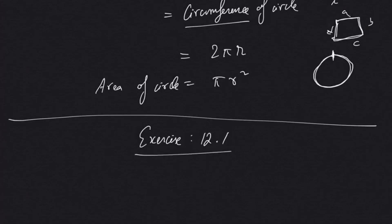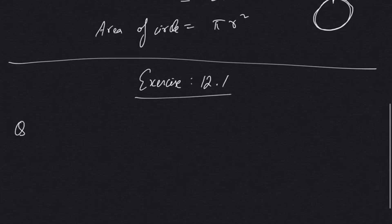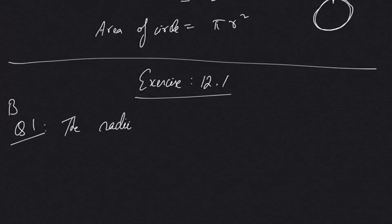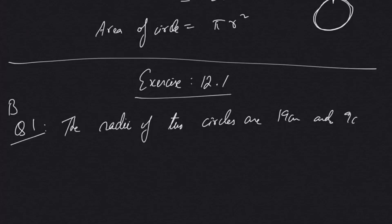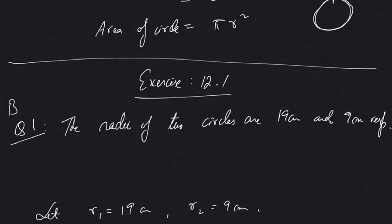Let's solve some questions from Exercise 12.1. Question number 1: The radii of two circles are 19 centimeters and 9 centimeters respectively. Let r1 be the first radius and r2 be the second radius.